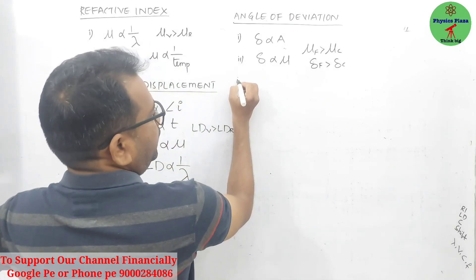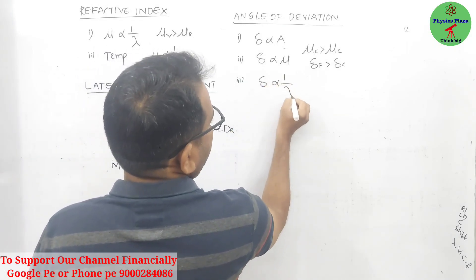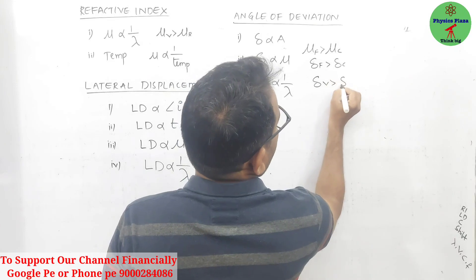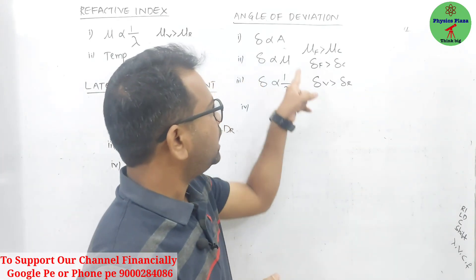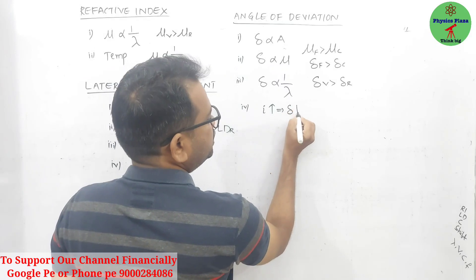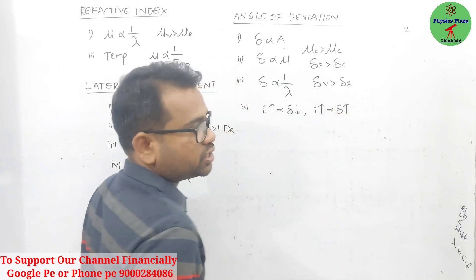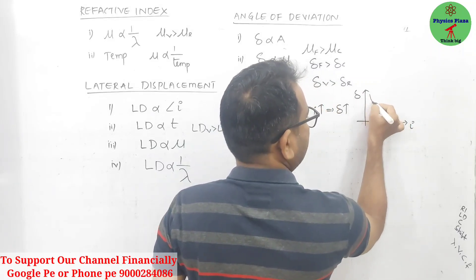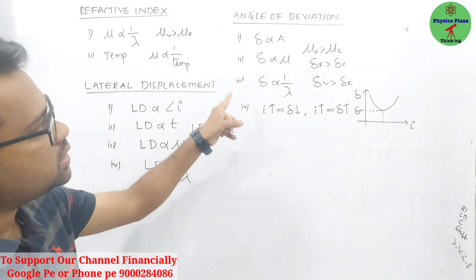Third factor for angle of deviation is wavelength or color — angle of deviation is inversely proportional to wavelength. For violet color, as wavelength is less, deviation is more than for red color. Fourth, for angle of incidence, we cannot say it is simply proportional or inversely proportional, because initially when angle of incidence increases, angle of deviation decreases, and further increasing causes it to increase again. The graph of angle of incidence vs. angle of deviation gives a curve with a minimum point called the minimum angle of deviation.